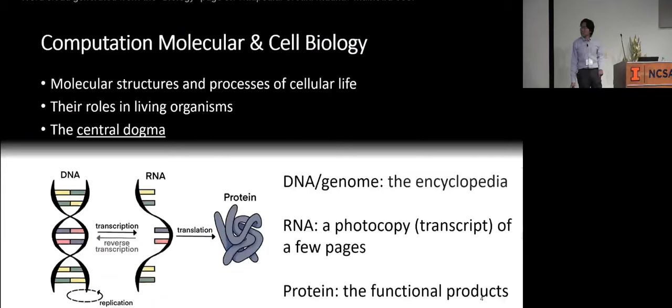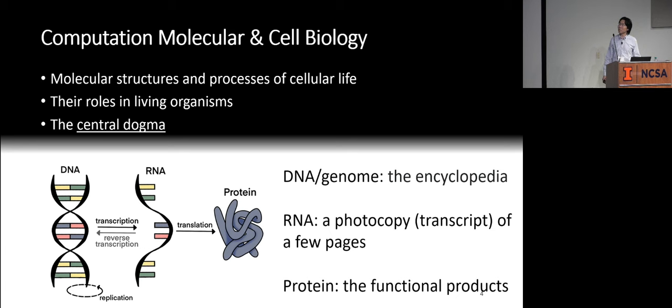This talk will be about computational molecular and cell biology. The molecules in the cell will determine the structure and process of the cellular life. And this study is also about their roles in living organisms. The center pillar of this area is the central dogma. What the central dogma says is that the DNA or the genome is the encyclopedia of life. And the RNA will be transcribed from the DNA. That's basically a photocopy or a transcript of a few pages of the very thick book of DNA. And those photocopies will then guide the production of proteins. Those will actually perform their functions in cells.